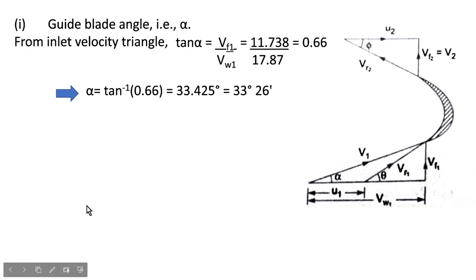The wheel vane angle at the inlet, that is θ. From the velocity triangle given, we know that tan θ = vf₁ divided by this side. This side is calculated as vw₁ - u₁.